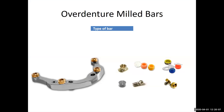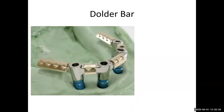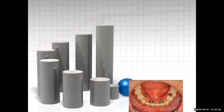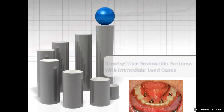There's a dolder bar — we don't do too many dolder bars anymore. We probably do more of the Hader eclipses; sometimes we do a combination on the anterior with a Hader eclipse and then locator or Brånemark attachments on the posterior region. That's a synopsis of some of the overdenture cases, scenarios, and protocol. Now we're going to talk about growing your removable business with immediate load cases.